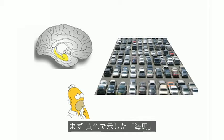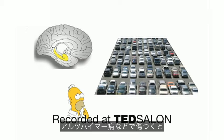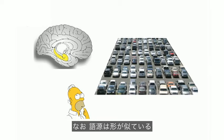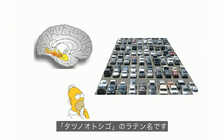So we start with the hippocampus shown in yellow, which is the organ of memory. If you have damage there, like in Alzheimer's, you can't remember things, including where you parked your car. It's named after the Latin for seahorse, which it resembles.